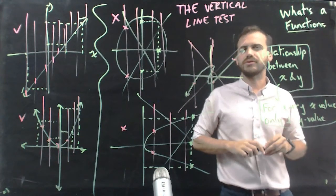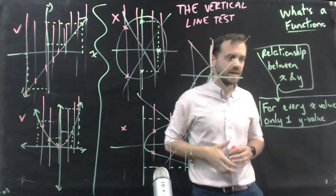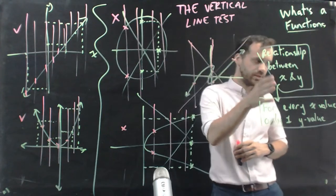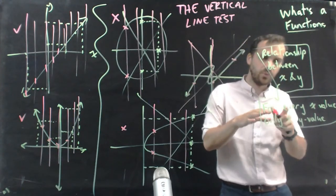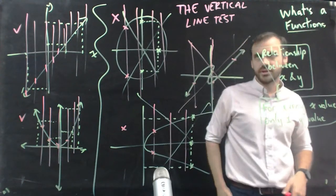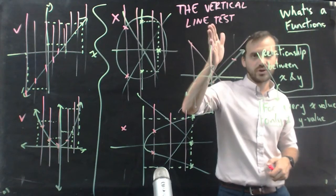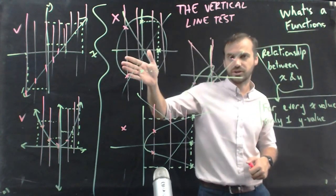Okay, now you have a good idea of what a function is. It's a relationship between x and y. For every x-value, there is only one y-value, and if it passes the vertical line test, it's a function.